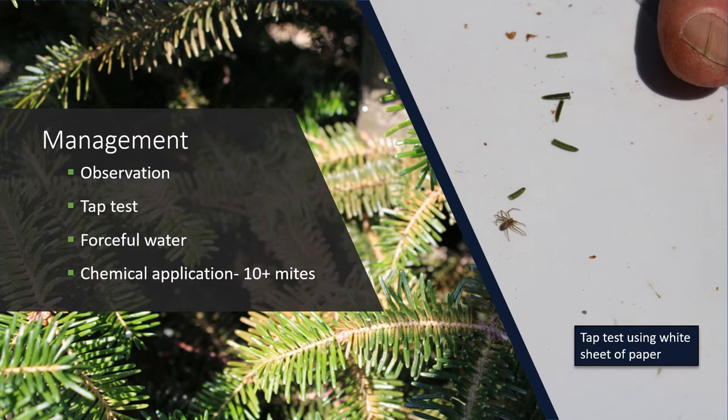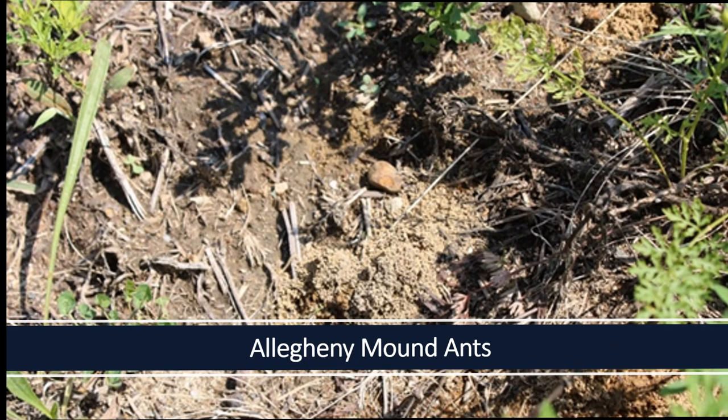Heavy rain will wash mites off plants and is a form of natural control. Similarly, a forceful stream of water can help reduce mite numbers.